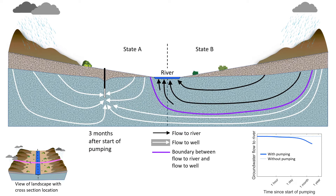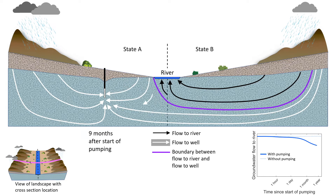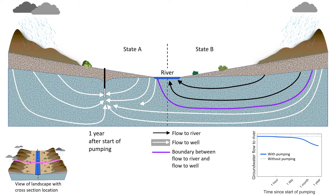At 3 months, groundwater flow from state B to state A's well continues to increase. At 1 year, the pumping begins to capture the shared river water as shown by the flow path from the river into the aquifer.